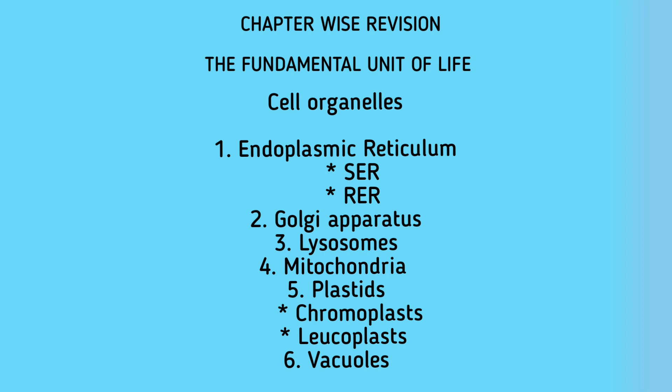The second organelle is the Golgi apparatus — membranous flattened sacs, tubules, and vesicles. Material synthesized near the endoplasmic reticulum is packaged and dispatched to various targets inside and outside the cell through the Golgi apparatus. The third is lysosomes — tiny, spherical, sac-like structures, also known as suicidal bags of the cell. Their function is to digest old and damaged cells.